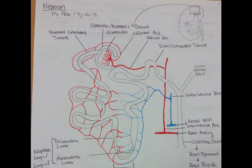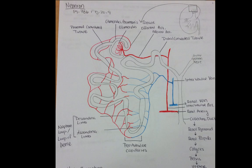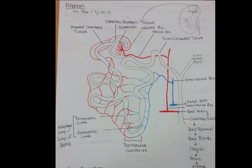Now that we've drawn everything, we can label it. I'm going to use a black pen so the labels are easier to see. We start here with the renal artery — blood flows in that direction. Blood will flow up, and this would be our interlobular artery. Blood flows up the interlobular artery, and as it divides into smaller vessels, we call these the afferent arterioles.